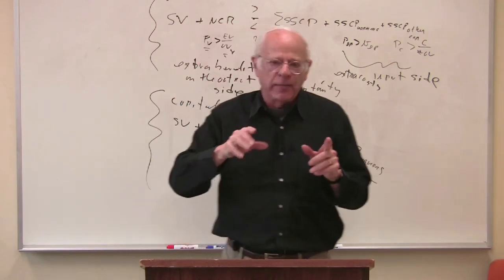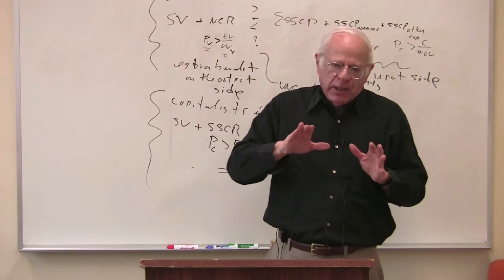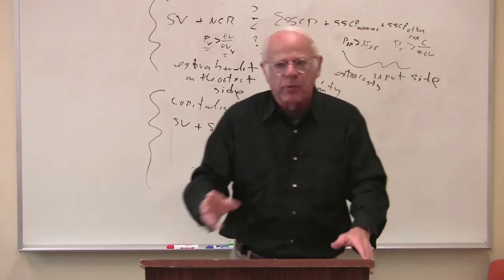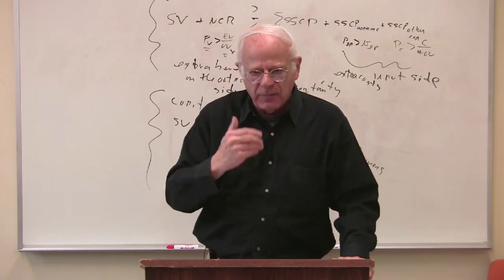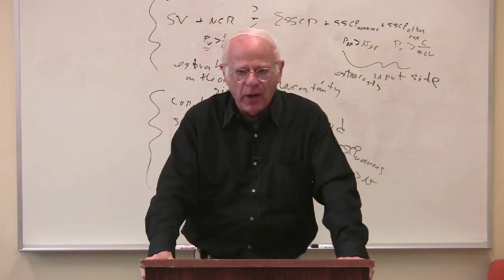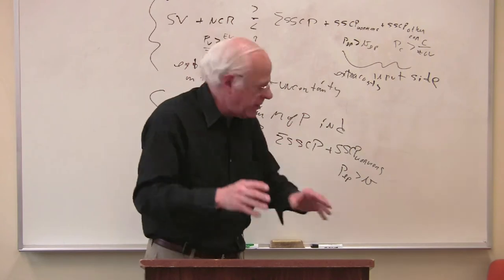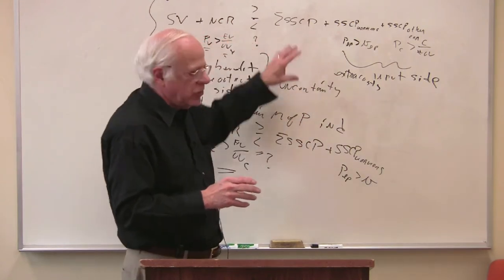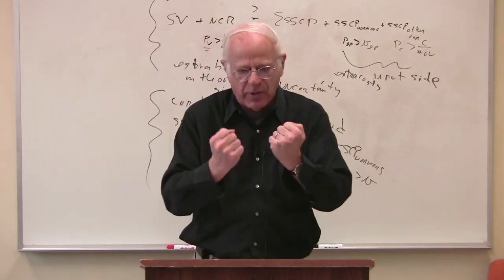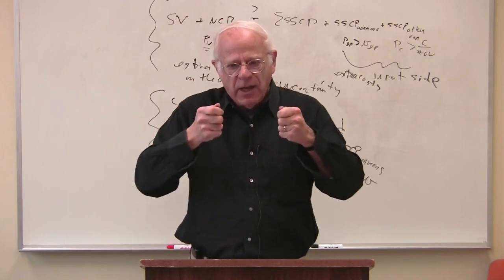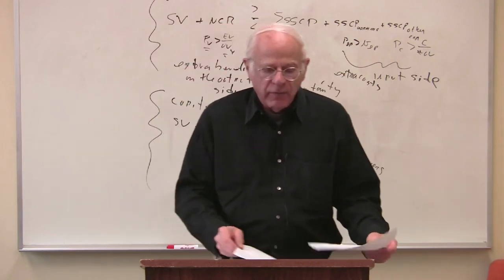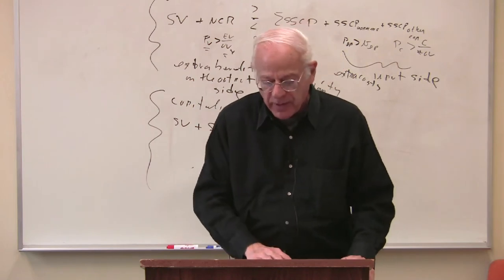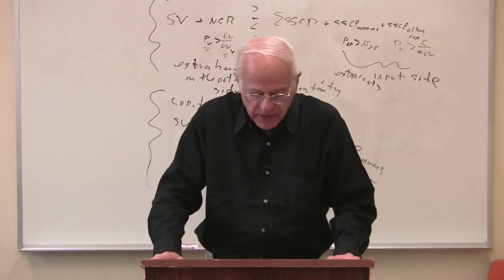Marx, in Volume 3 of Capital, calls the wage good industry Department 2, and calls the capital good industry the means of production Department 1. So in the two great departments, Department 1, means of production, Department 2, wage good industries, these two great departments, we have this uncertainty, and it's possible, at any moment, for it to go one way or the other.